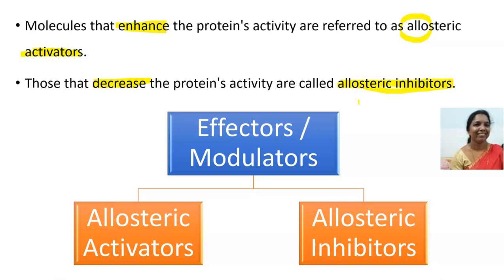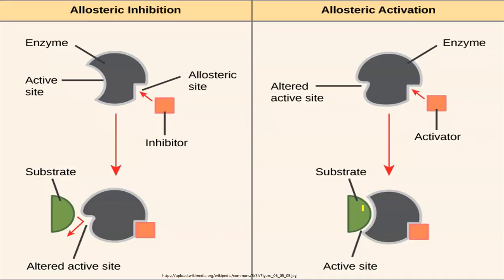The molecules binding to the allosteric sites are called effector molecules or modulators. They can modulate either positively or negatively. What they are modulating is the enzyme activity — converting the substrate into product is the enzyme activity.